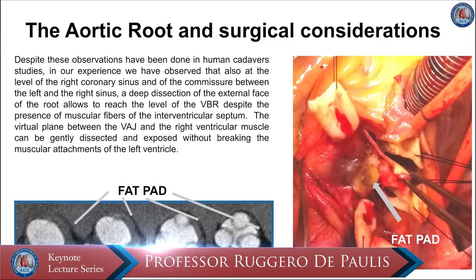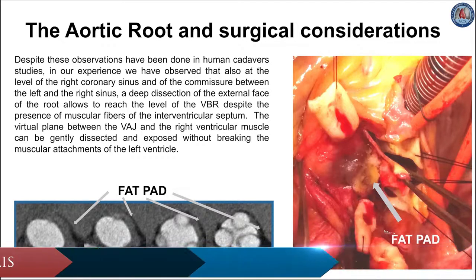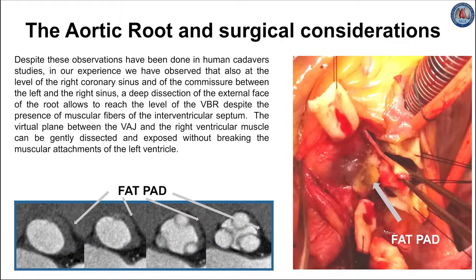In our experience, the presence of the ventricular-arterial junction does not prevent reaching the level of the virtual basal ring where the annuloplasty ring or a Dacron graft needs to be positioned. However, sometimes, because of the tissue thickness due to the presence of muscle, the external circumference of the virtual basal ring will be significantly larger than the internal circumference of the virtual basal ring.